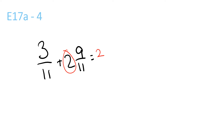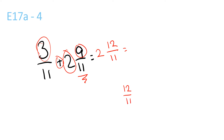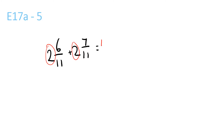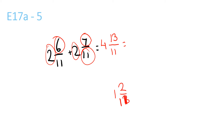2 plus 3 plus 9 is 12 over 11, and the bottom one stays the same. We can simplify that even more. 12 over 11 is equal to 1 and 1 over 11, because 11 goes into 12 once with a remainder of 1, and the bottom one stays the same. So then you get 1 and 1 over 11 plus 2, which is 3 and 1 over 11. 2 plus 2 is 4, and 7 plus 6 is 13 over 11, which is 1 and 2 over 11. So you get 4 plus 1 and 2 over 11, which is 5 and 2 over 11.